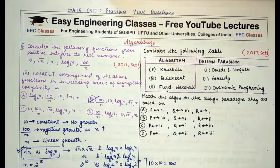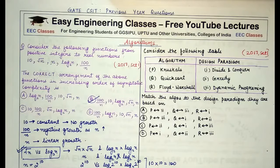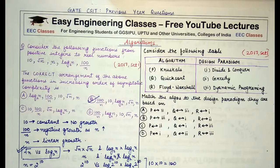Coming to the second question: we have to match different algorithms with their design paradigms. If you are clear with the concept of different algorithms and how they work, this is a very easy question. Kruskal's algorithm basically works using the greedy approach — it sees what is the next edge with minimum weight to form the spanning tree, choosing the greedy option at every iteration. So Kruskal's works as a greedy algorithm.